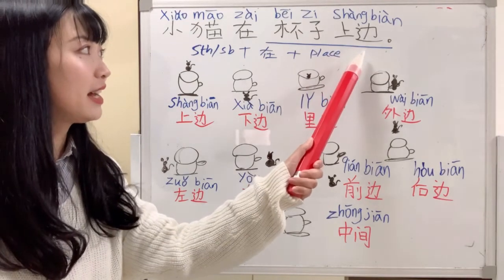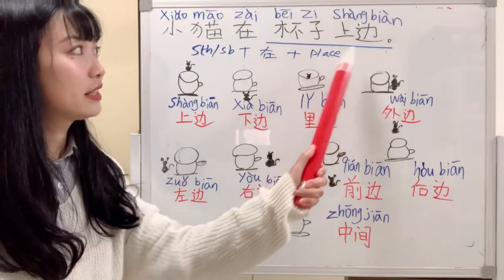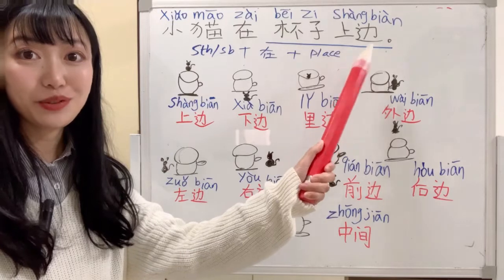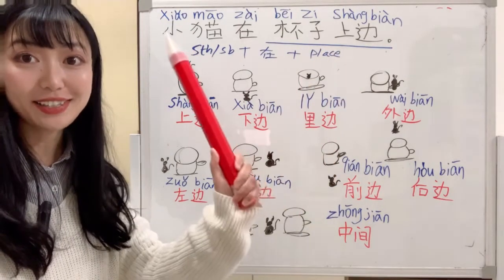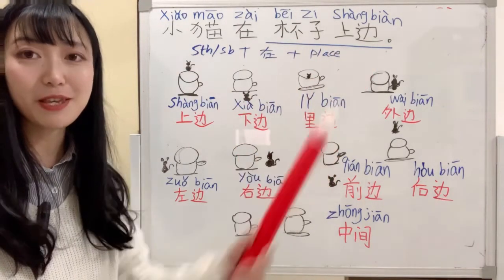中间 - left or right, it's here. It's put here after the object. 小猫在杯子上边.